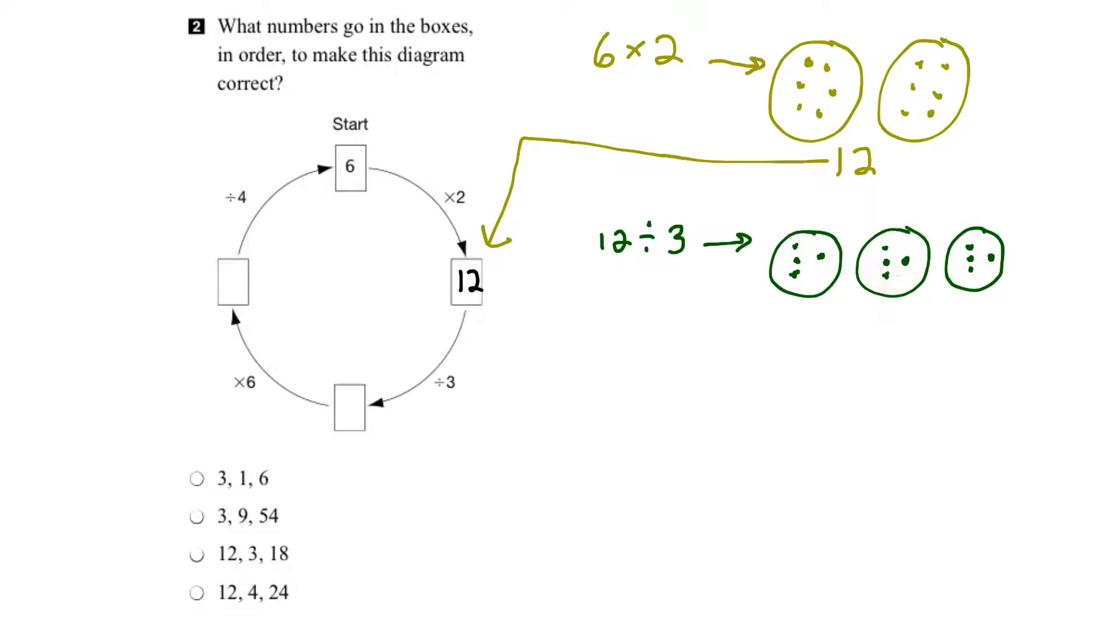So if I take these 12 units all together, break them up into 1, 2, 3 groups, how many do I have in each group? I have 4 units in each group. So I can take the number 4 and stick it into the box here, like so.